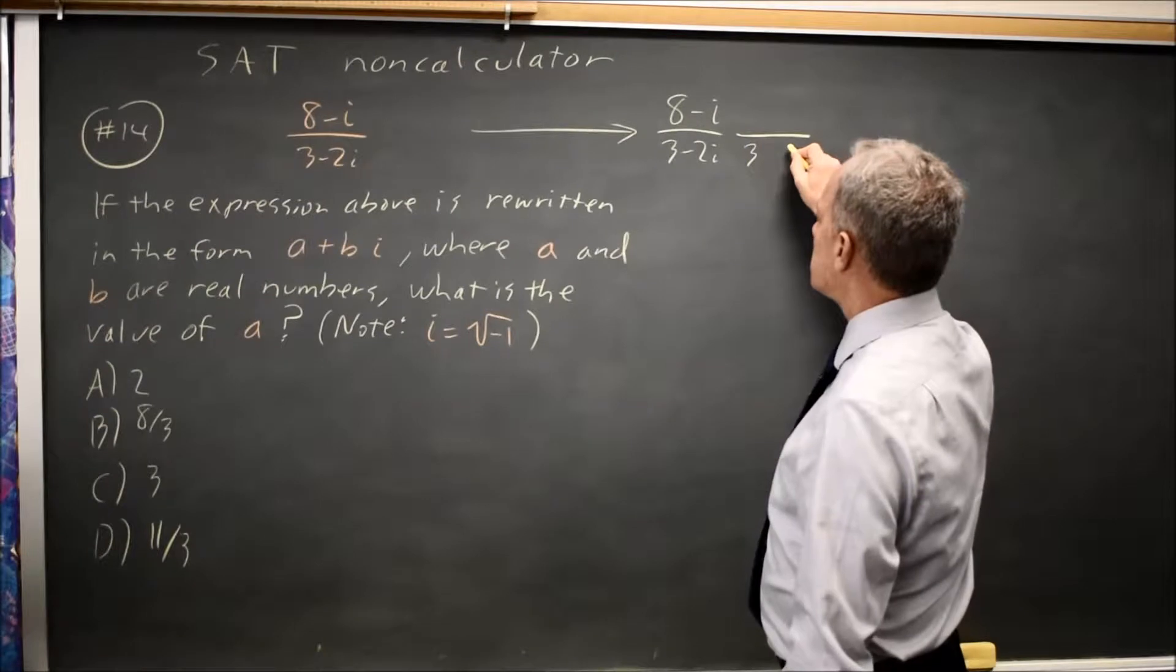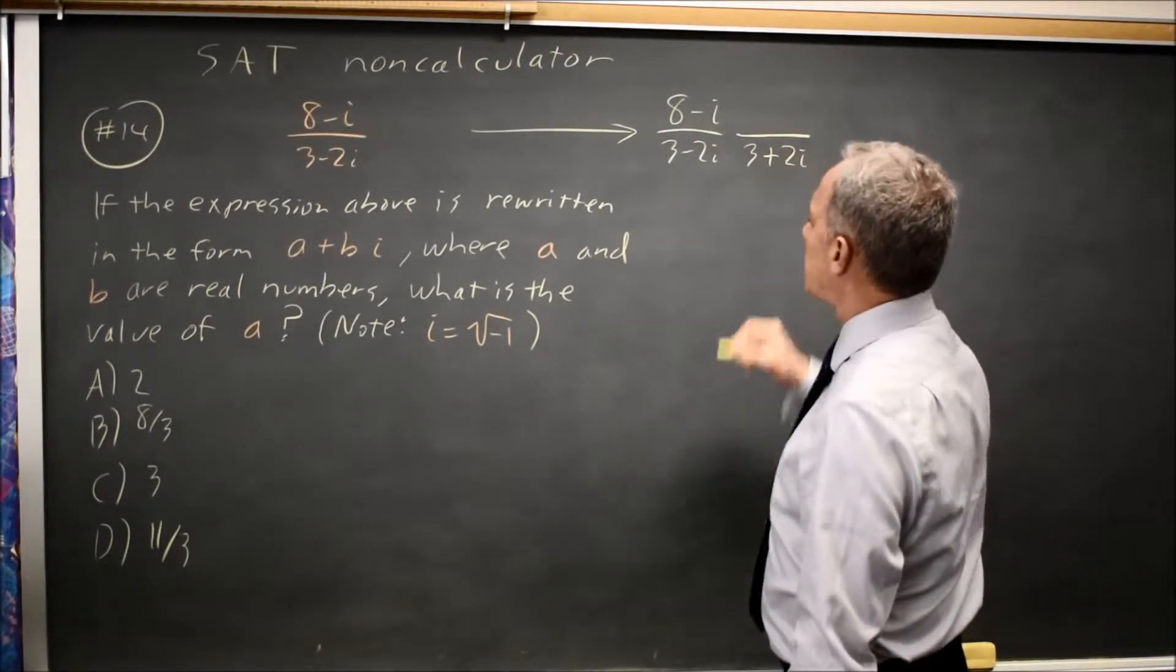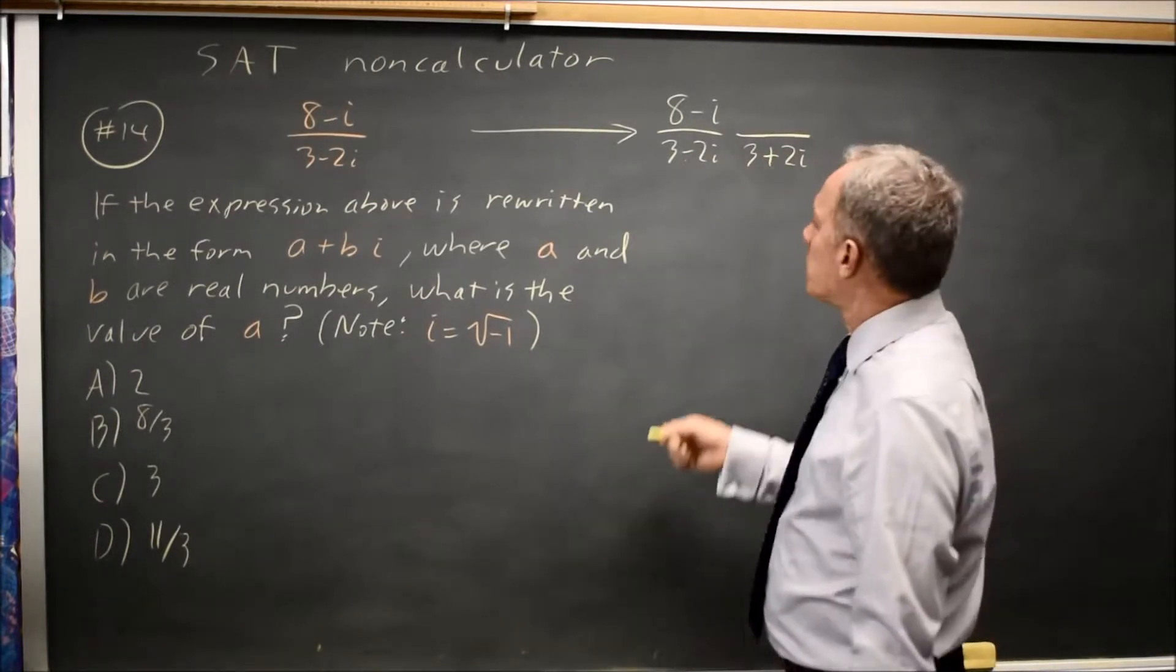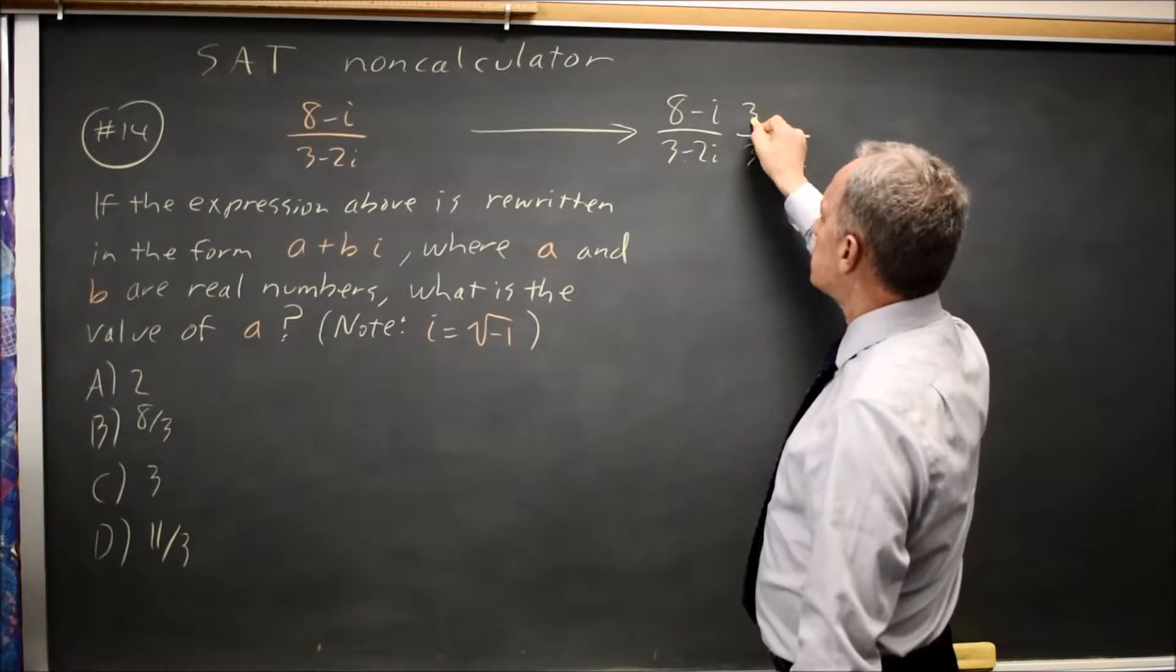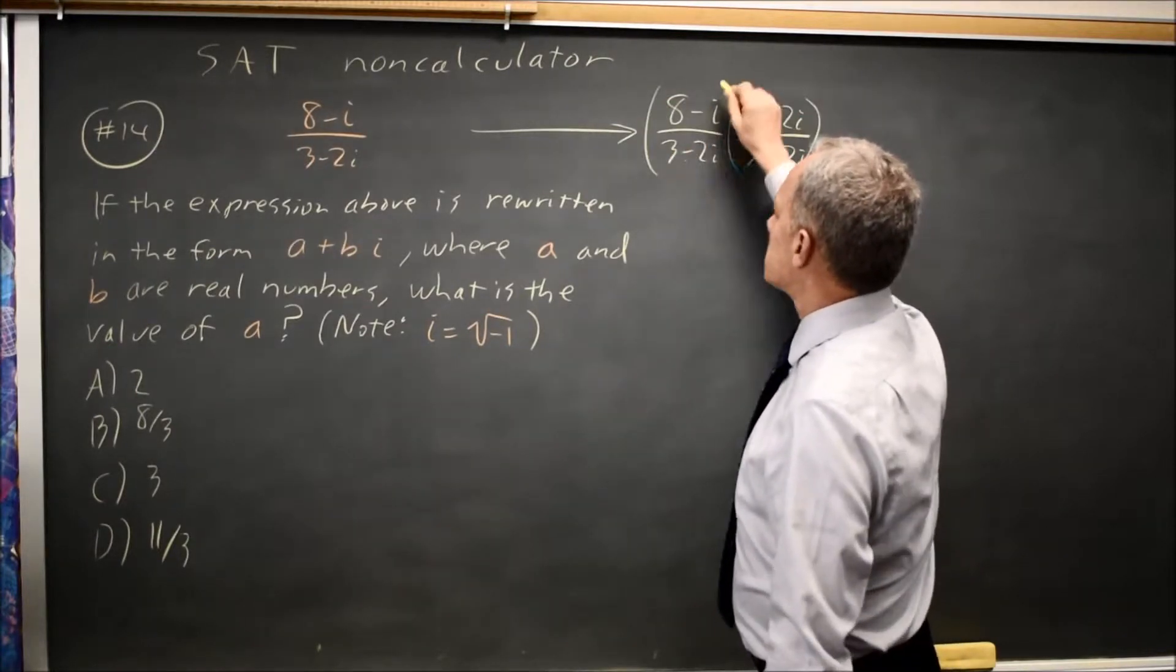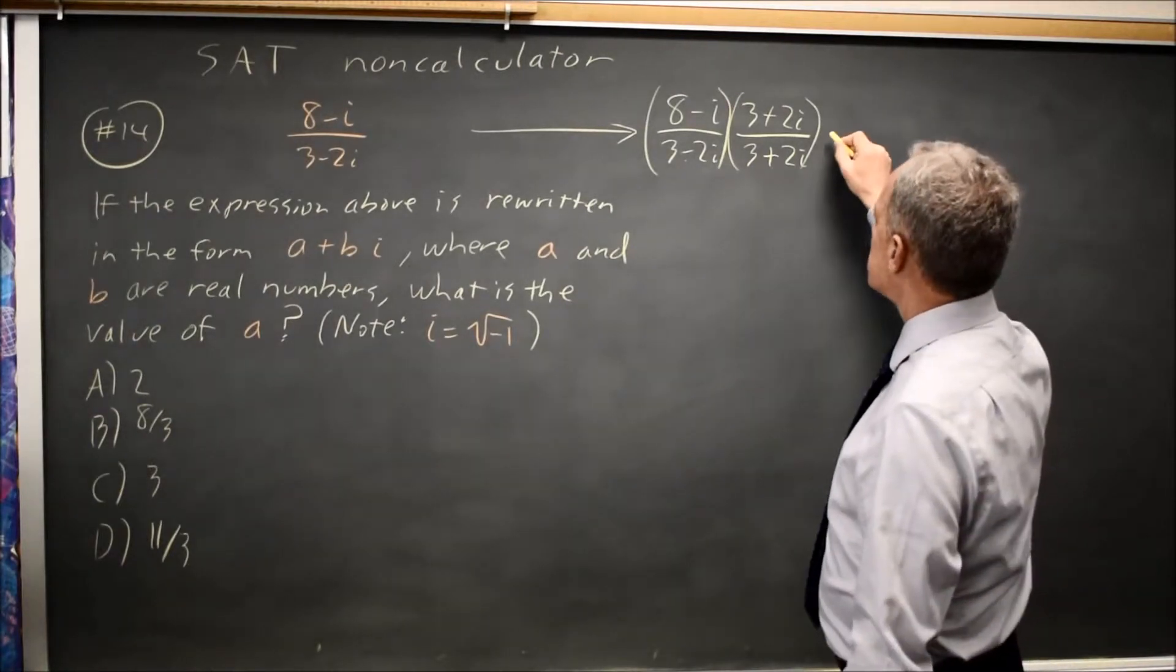To get the complex conjugate you keep the 3, you keep the 2i, and you flip the sign on the imaginary part. So this was negative, we make it positive. If you're multiplying the denominator by that expression, you multiply the numerator by the same expression because anything over itself is 1, and you're allowed to multiply by 1 that doesn't change your expression.